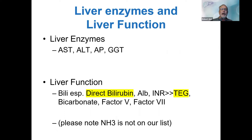First off, I always like to remind everybody that AST, ALT, ALK, FOS, and GT are not liver function tests. I still find many of my senior colleagues using the wrong terminology, so please join the current nomenclature. When you're talking about liver function, talk about bilirubin — most importantly, direct bilirubin.